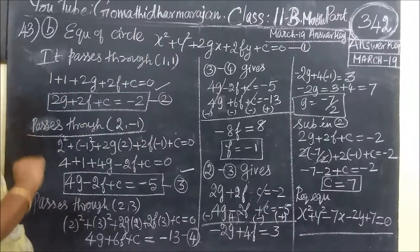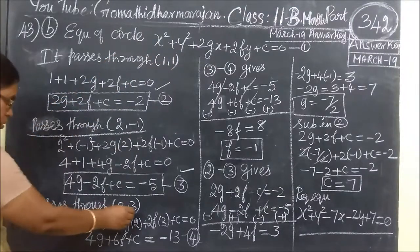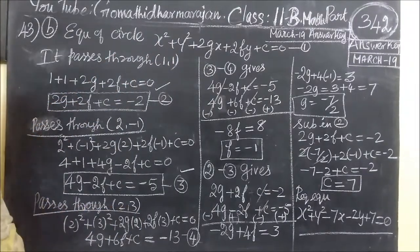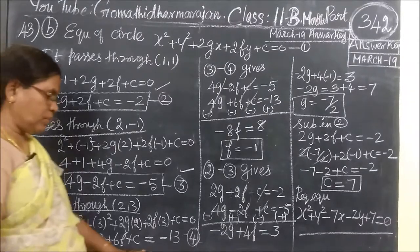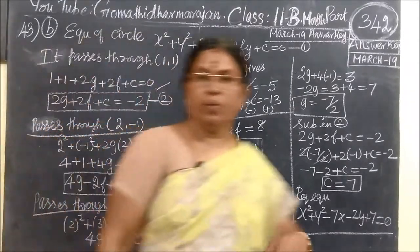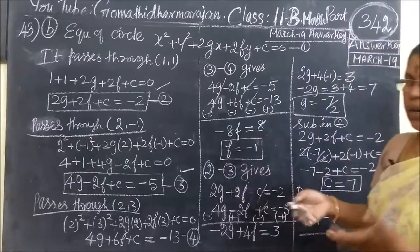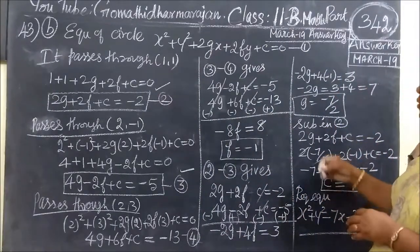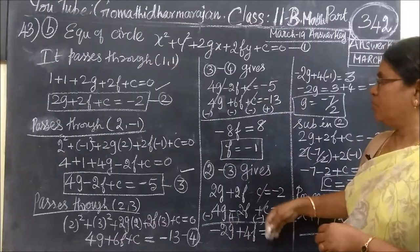And the equation is 1. It passes through 2, 3. So the equation of it, we will find equation 4. The equations are 1, 2, 3. Here you will see the correct equation.